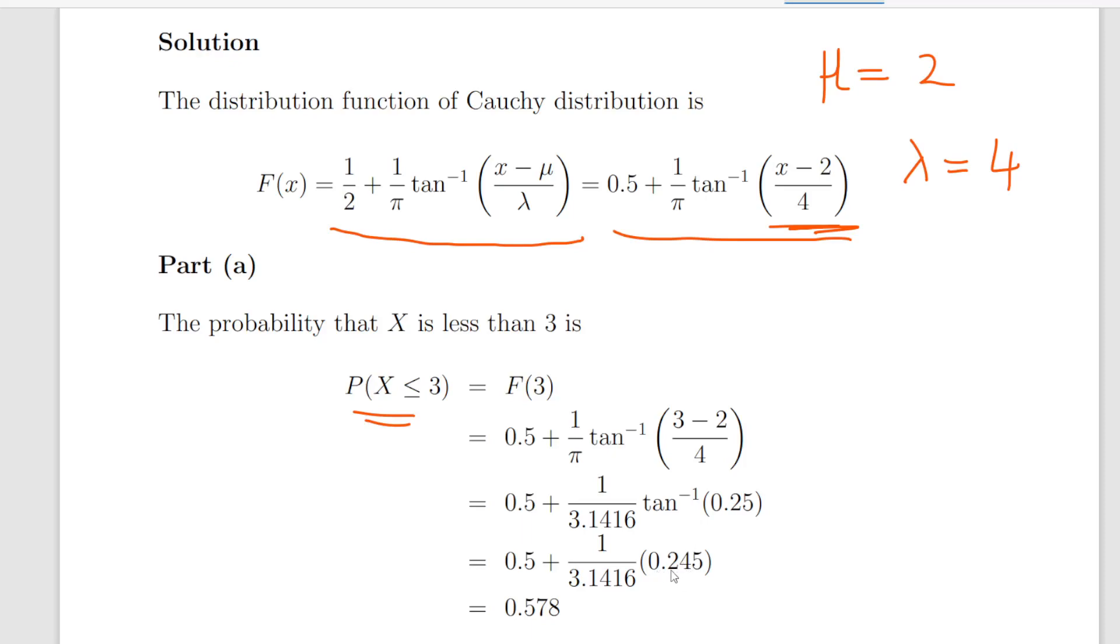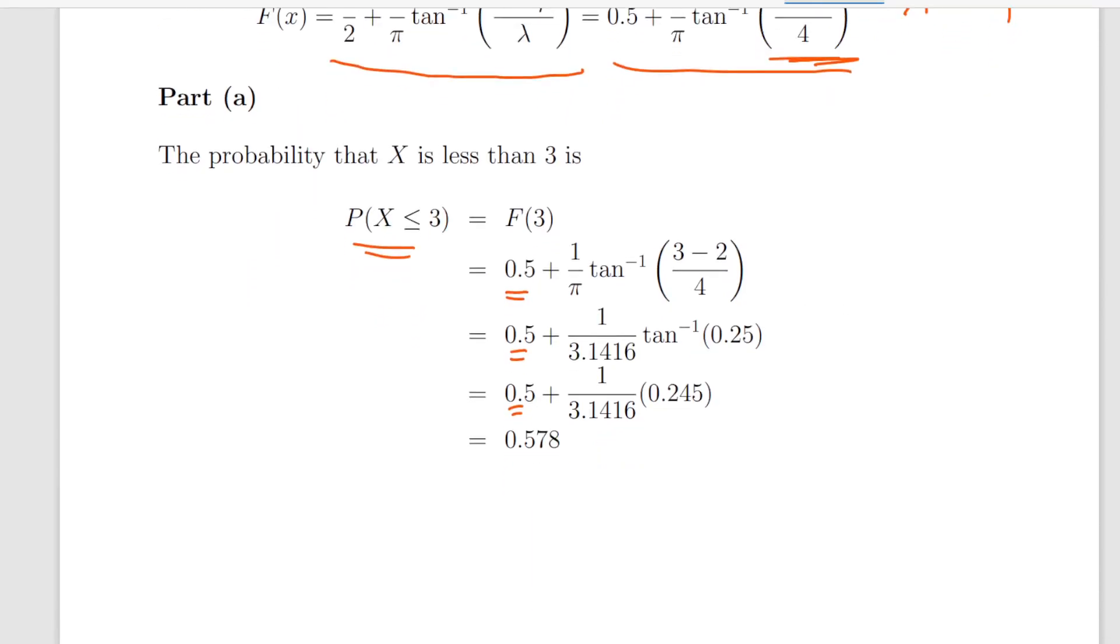And that should work out to be 0.245. 0.5 is constant throughout. Okay, and we have 1 over pi, which is 1 divided by 3.1416. The fact that I don't have that off the tip of my tongue is a bit disturbing. Anyway, so it works out to be 0.578.